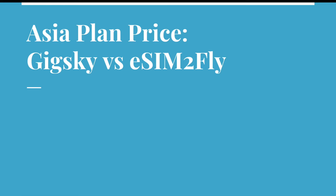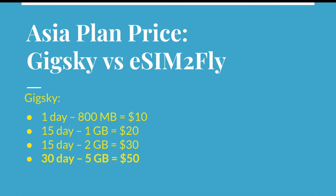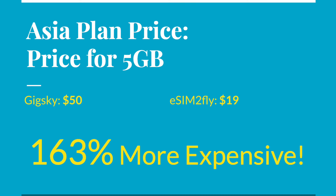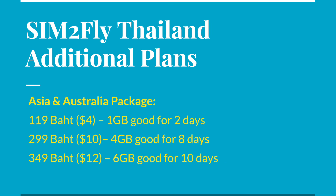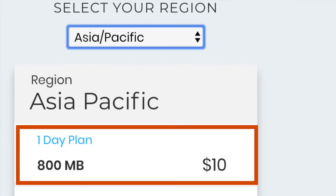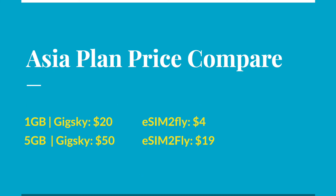Now let's take a look at the prices. SIM2Fly's default package is $19, giving 8 days and 5 GB. The closest GigSky equivalent is a 30-day package for 5 GB at $50 — quite a substantial difference. After your first SIM2Fly package is finished it gets a lot cheaper: you can get 2 days with 1 GB for about $4. Even the GigSky 1-day plan at $5 with the coupon is still more expensive — you're only getting 800 MB instead of a gigabyte, and here you're getting 2 days. GigSky is substantially more expensive.